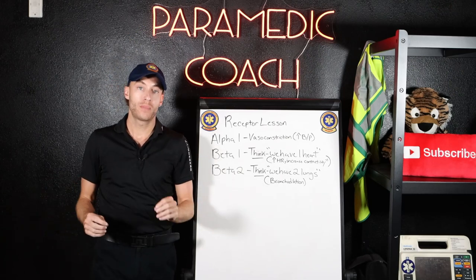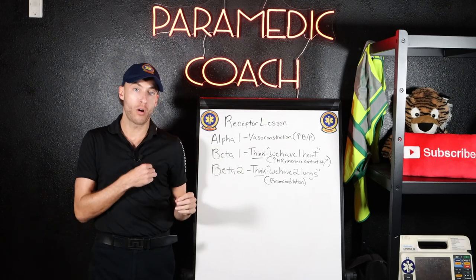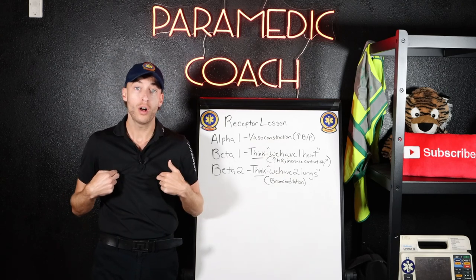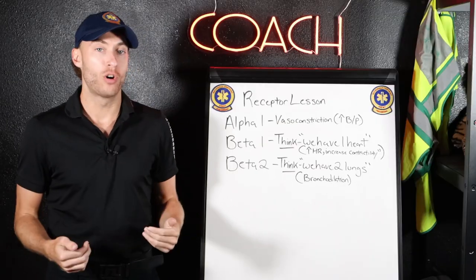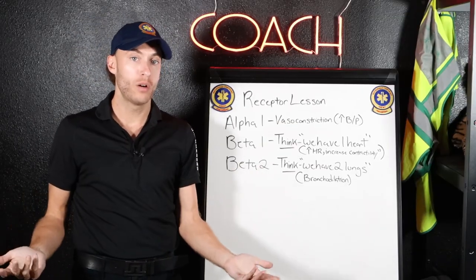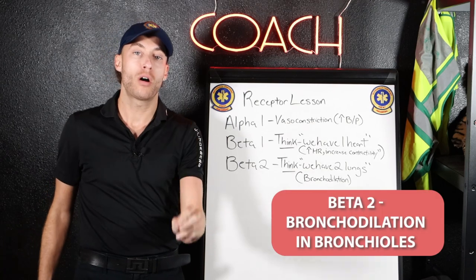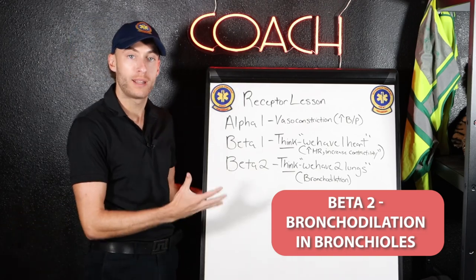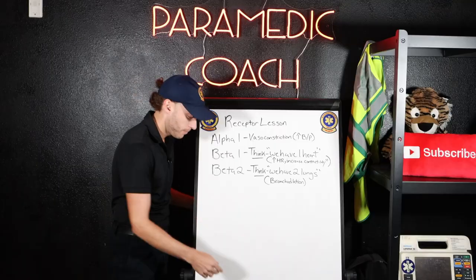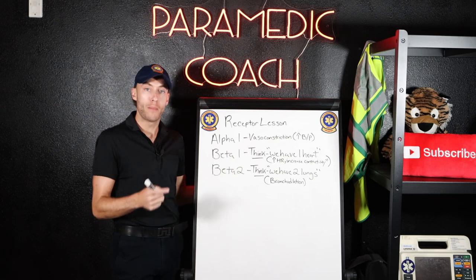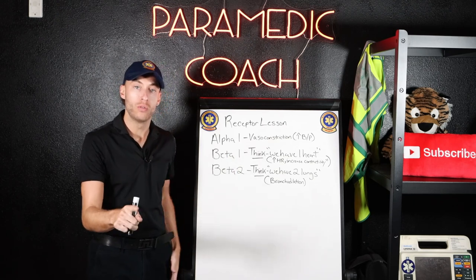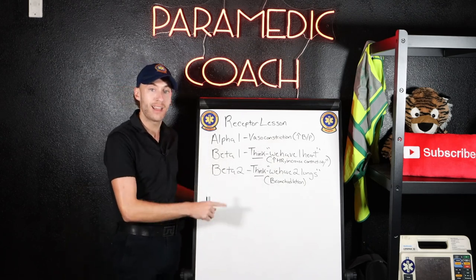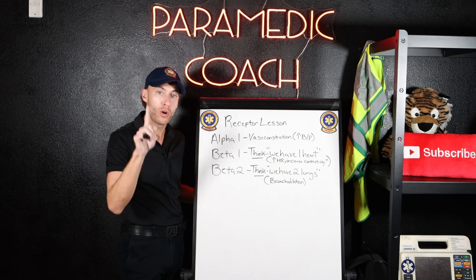So what we say is: beta-1 — we have one heart. That's how you remember it. Now with beta-2, we have two lungs. It has to do with the lungs. What does it do? It's going to bronchodilate in the bronchioles. So beta-2 has to do with the lungs. I'm going to clean the board, and I'm going to show you two medications that are AEMT medications that affect these receptors.